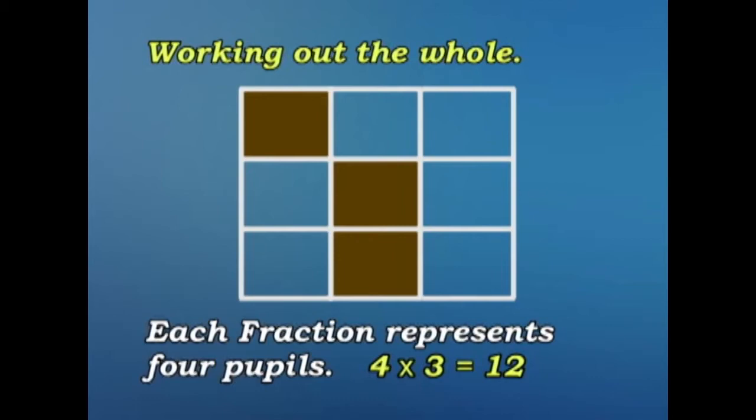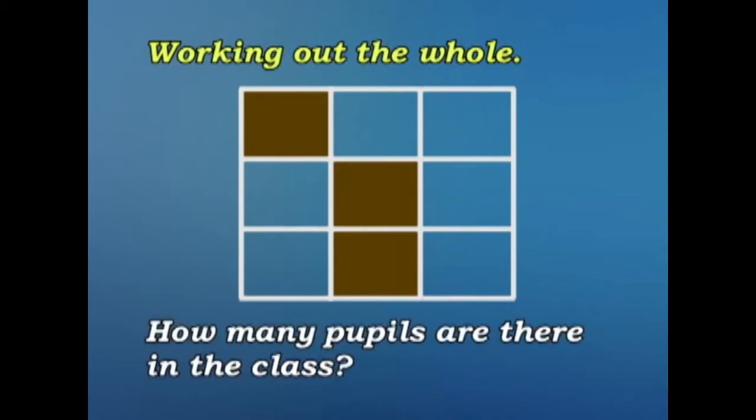Now then, we've divided the class into 9 equal fractions. Each part, each fraction represents 4 pupils. So 9 times 4, that's 36. There are 36 pupils in the class.